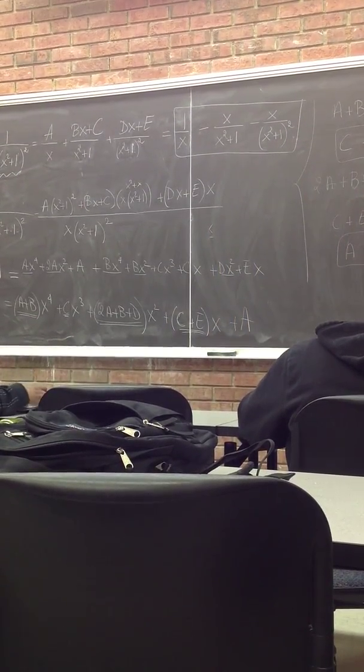And then which one is 0? The d or the e? The e is 0, but d is minus 1. So we have minus x over x squared plus 1 squared. And this would be the decomposition of that function.